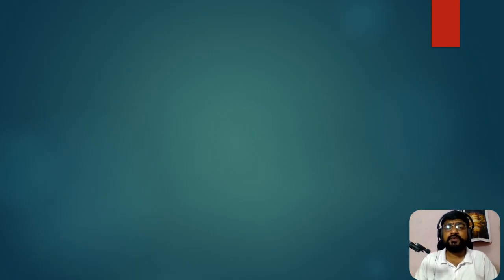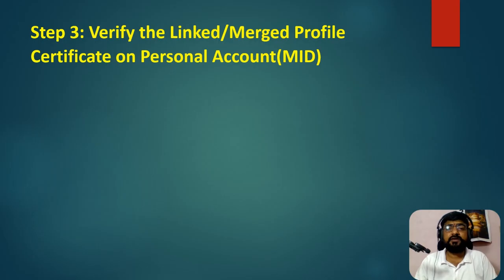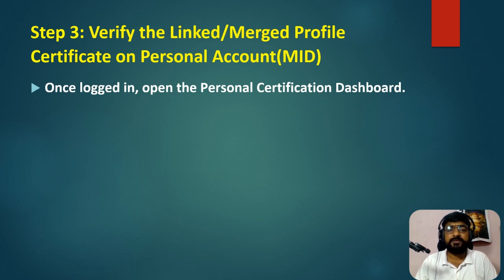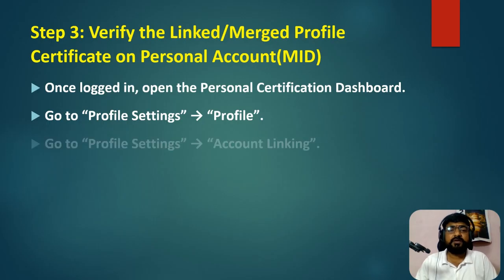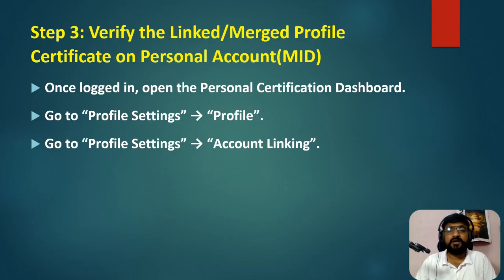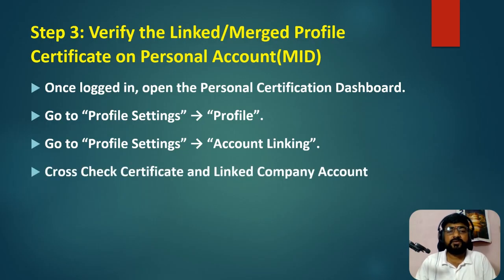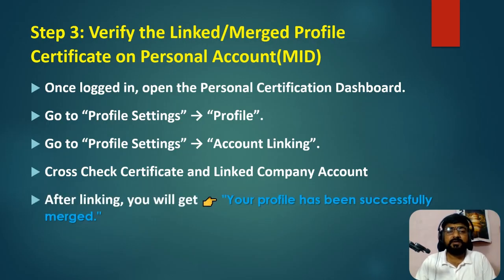We have now successfully linked the company Microsoft ID to the personal Microsoft ID. Step number three: verify the linked or merged profile certifications on your personal Microsoft ID. Log into your personal certification dashboard, go to profile settings, and check that whatever certifications were linked with your company Microsoft ID are now reflected there. Go to profile settings, then account linking, and verify the company Microsoft ID is linked. Finally, scroll down and check that the message 'Your profile has been successfully merged' is shown in green.